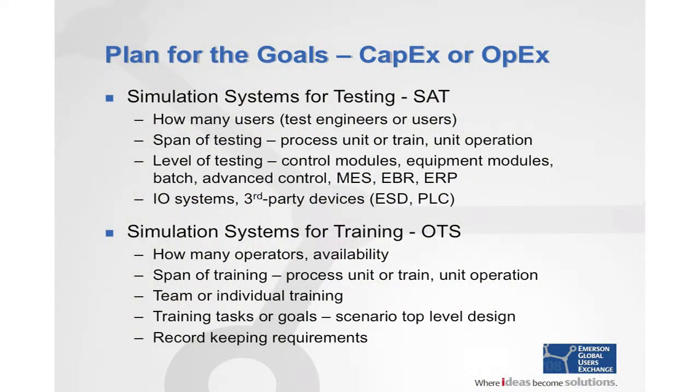Let's talk about the goals. It doesn't matter whether you're doing an automation project, an instrumentation upgrade, or any type of project — it's really important to start off by defining the goals of the system. Simulation systems are often an add-on to automation projects and don't get the necessary planning. For software acceptance testing (SAT), you need to think about how many engineers or testers will be involved, because that will help you architect and design the simulation system.